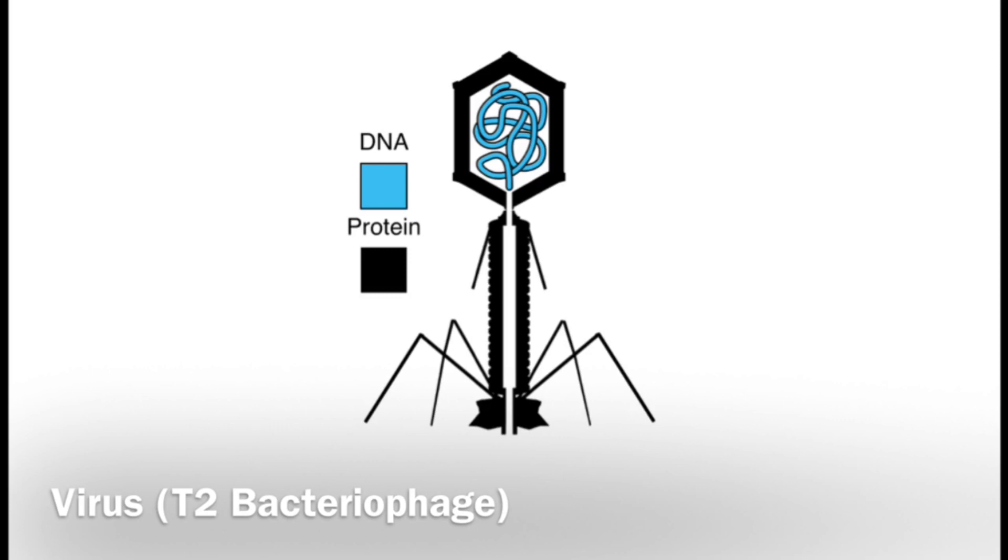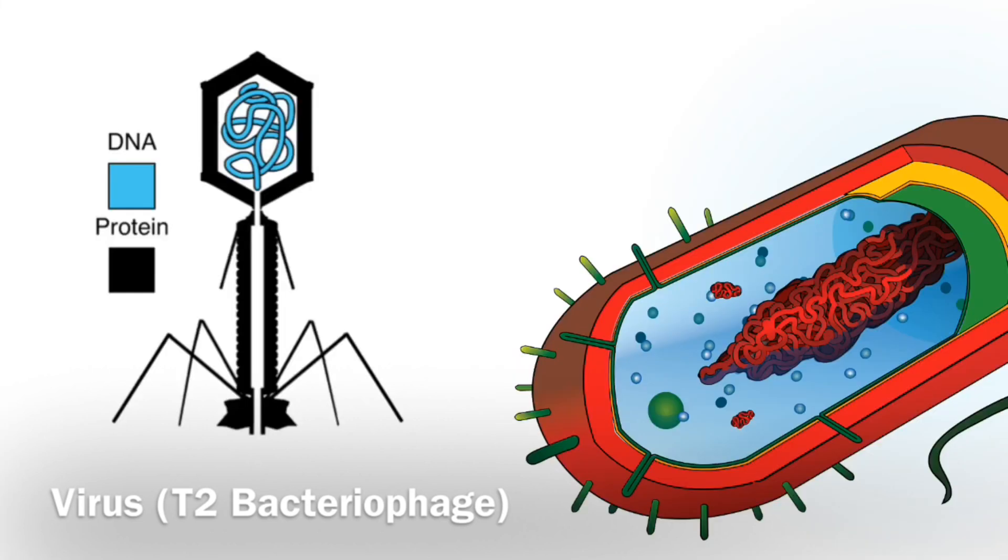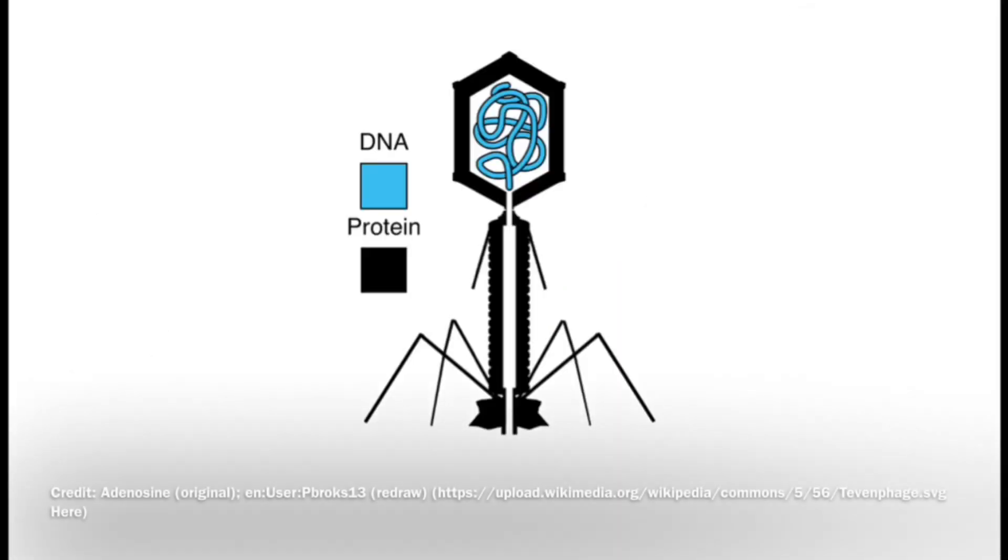Now viruses use host cells in order to reproduce and in this case these viruses infect bacteria. And so the question became when the virus is used to infect the bacteria, would it be the DNA or would it be the protein that was present in the viral offspring or progeny found inside the bacteria?